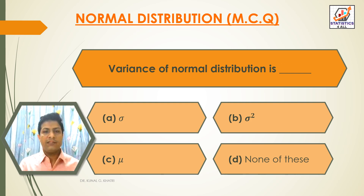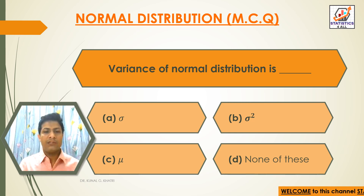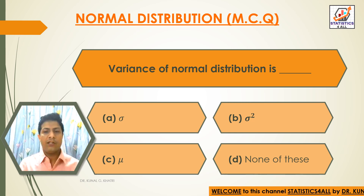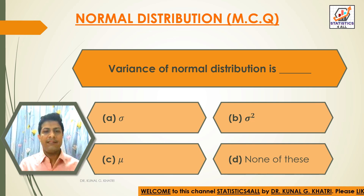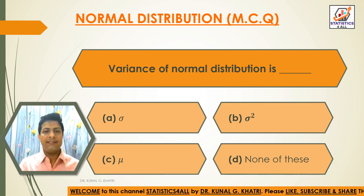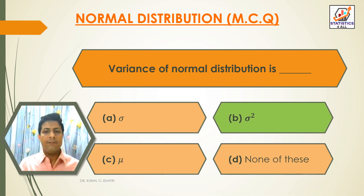Next question: Variance of normal distribution is — Option A: sigma. Option B: sigma squared. Option C: mu. Option D: none of these. The answer is Option B — sigma squared. The variance of normal distribution is sigma squared.